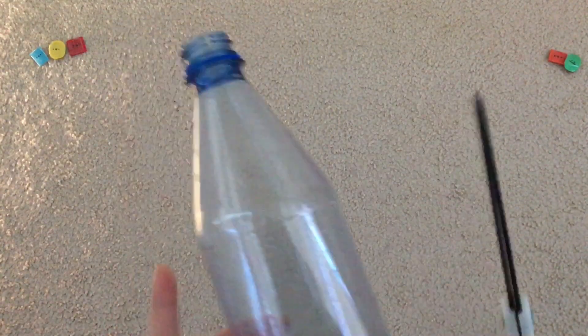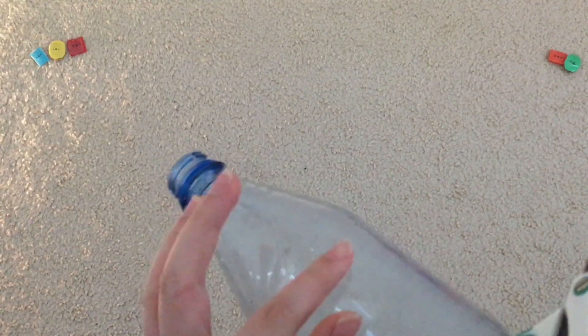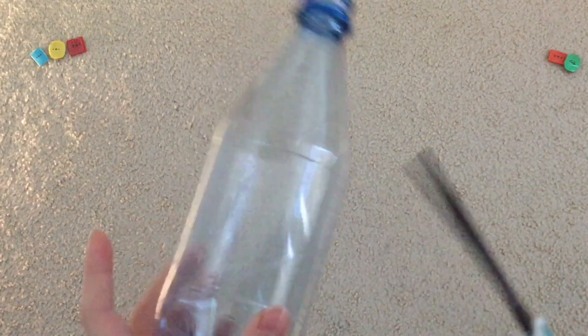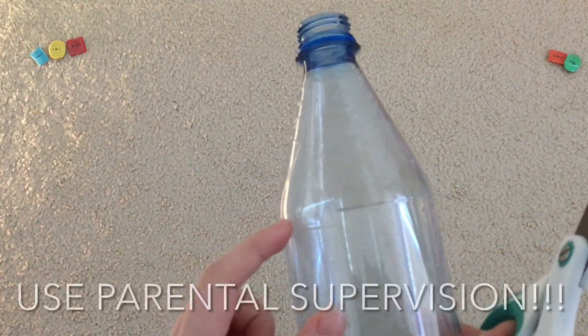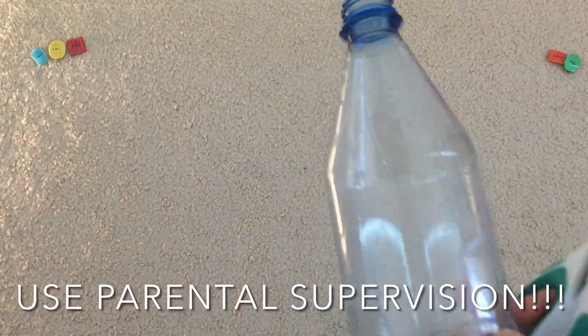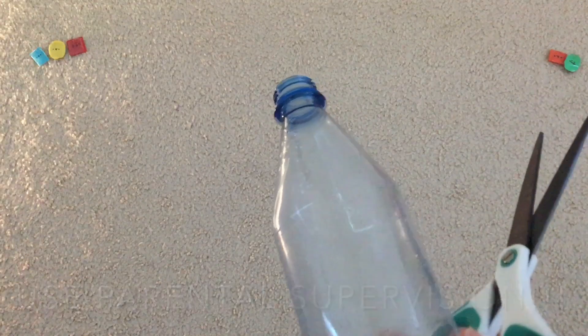The first step that we're going to do is that we're going to take this part, like the bendy part, where like it has a dip in the bottle. You're going to cut that off and be very careful with this because it is very sharp and you might want to use parental supervision. So I'm just going to do that off camera.